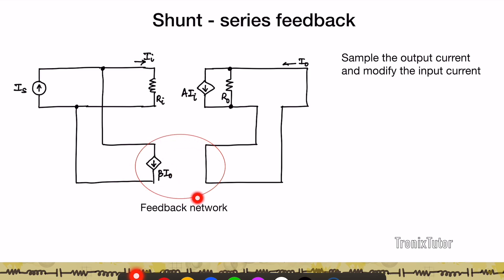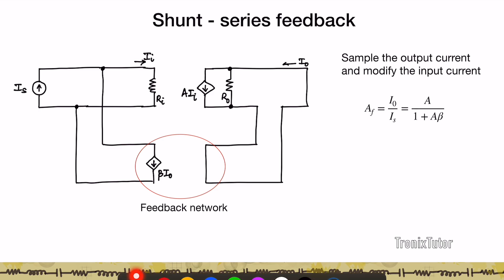The feedback network is also a current amplifier, taking in an input current and giving out an output current. In this case, the closed-loop gain is given by A divided by one plus A-beta.